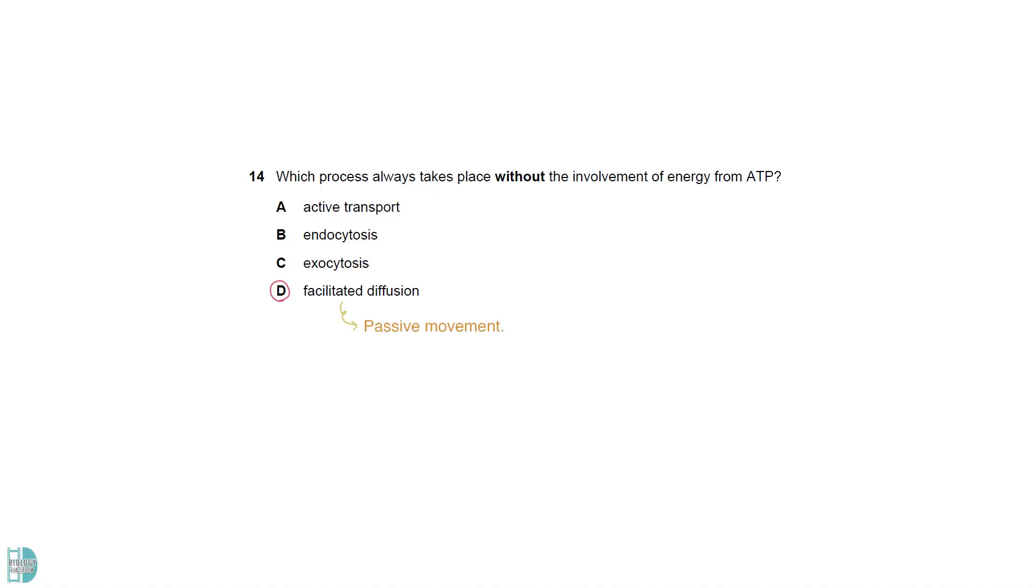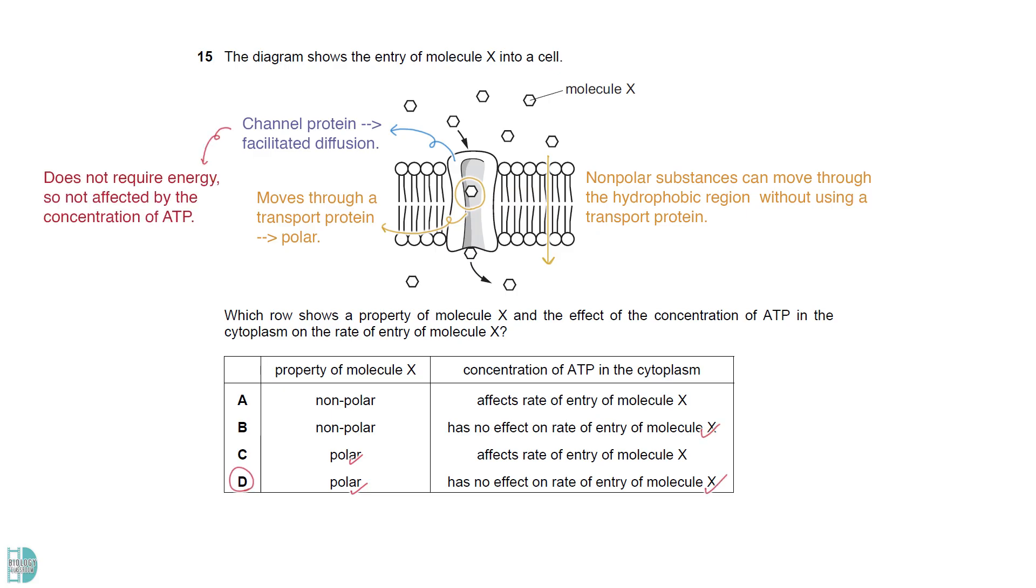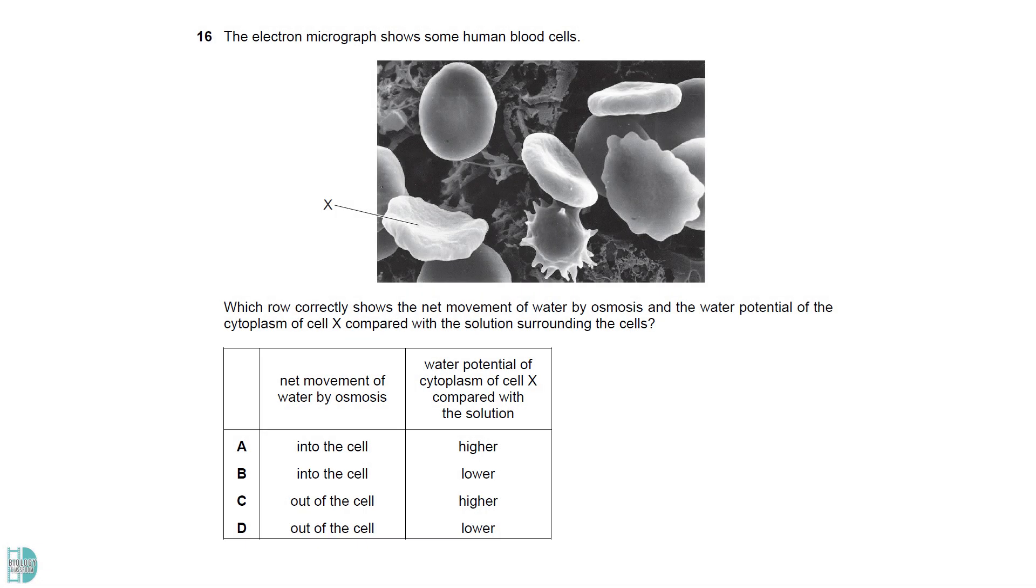Facilitated diffusion is a passive movement. It occurs due to the kinetic energy of the substance, causing it to move down its concentration gradient. Cells do not have to supply energy for it to occur. Molecule X moves through a transport protein. It is a polar molecule. A nonpolar substance can move through the hydrophobic region of the phospholipid bilayer, without using a transport protein. The protein in the diagram is a channel protein. It is for facilitated diffusion. Since this process does not require energy, it is not affected by the concentration of ATP.